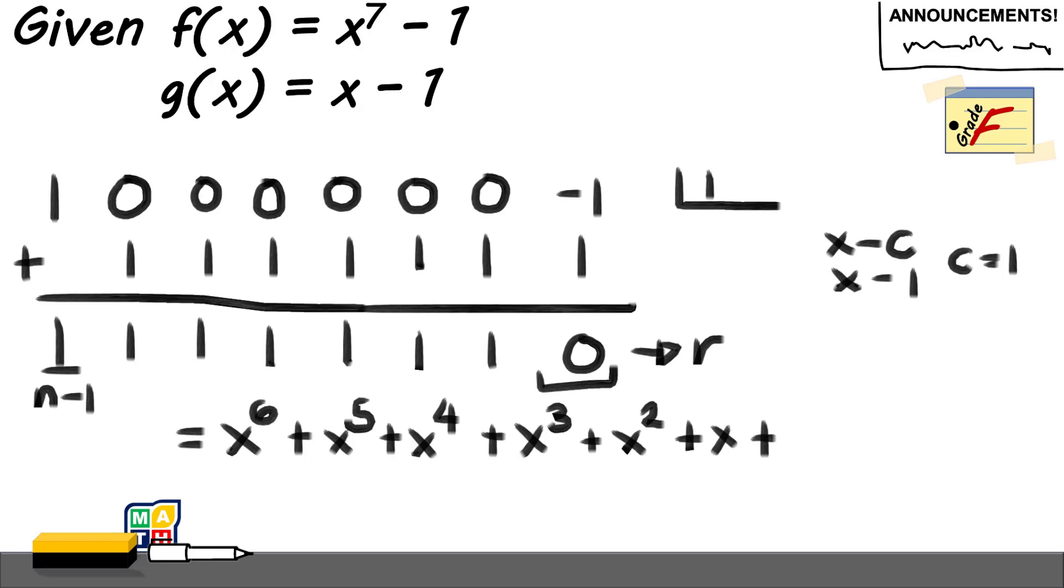Again, no remainder for this because our remainder here is 0. So, our quotient when we divide f(x) being x to the power of 7 minus 1 by our divisor g(x) being x minus 1 is x to the power of 6 plus x to the power of 5 plus x to the power of 4 plus x cubed plus x squared plus x plus 1.